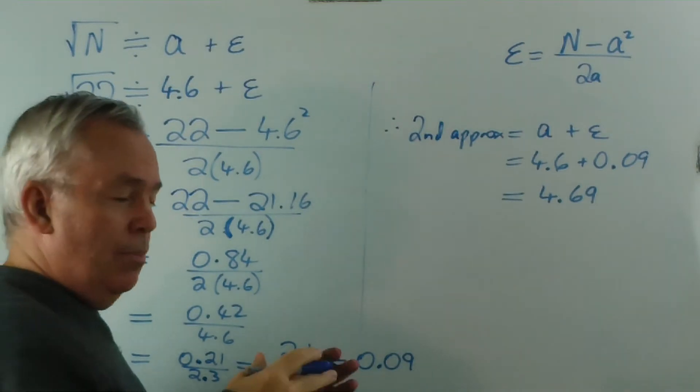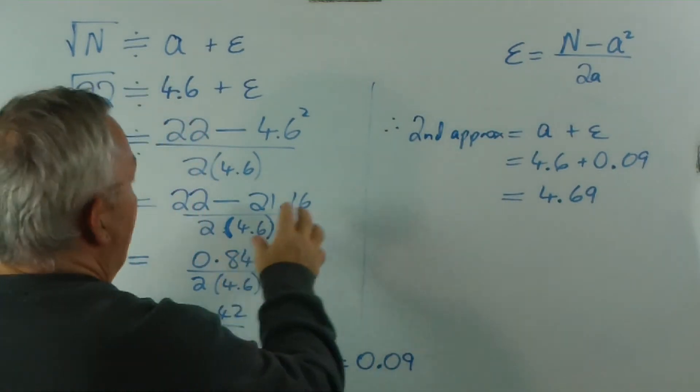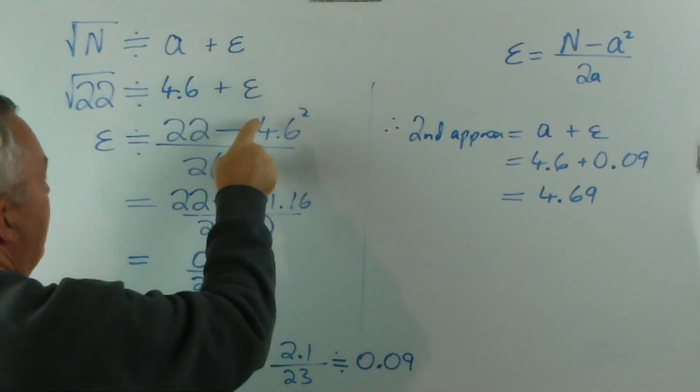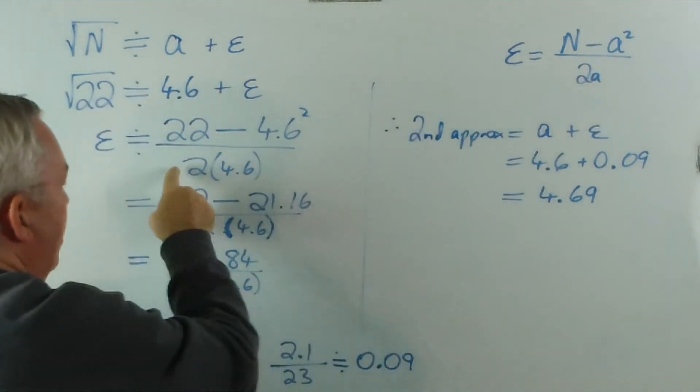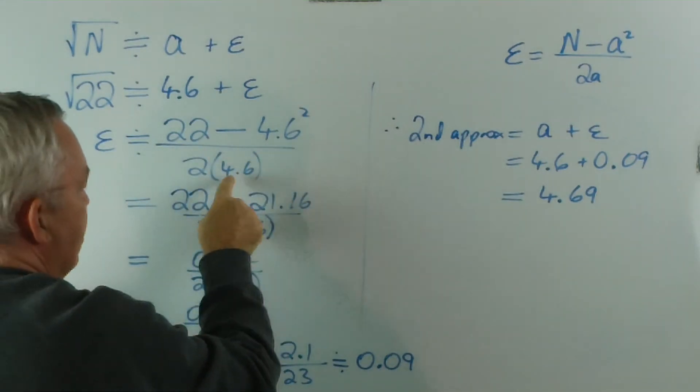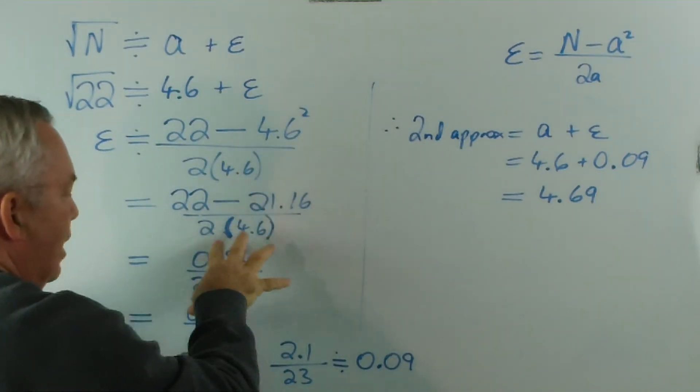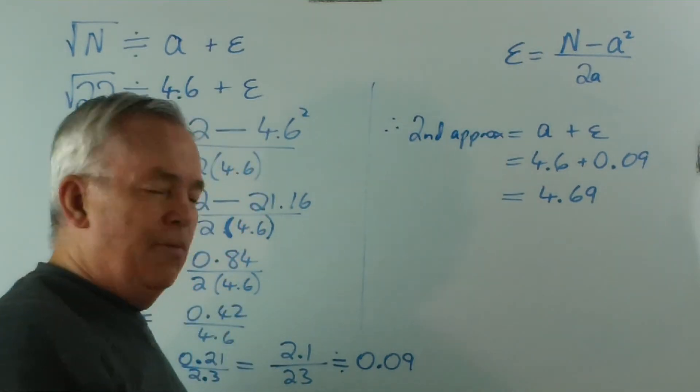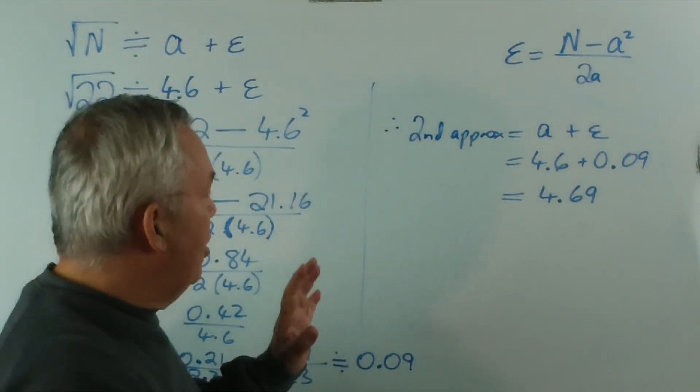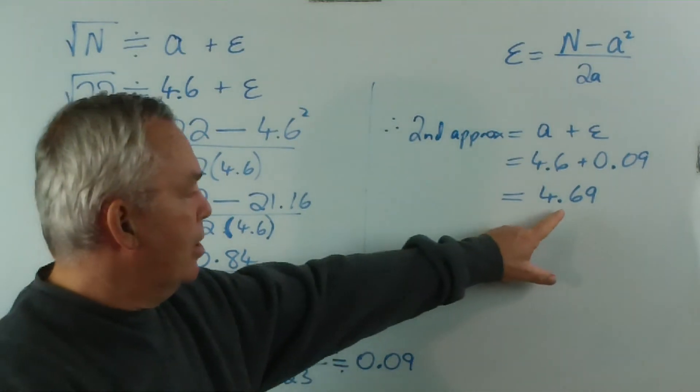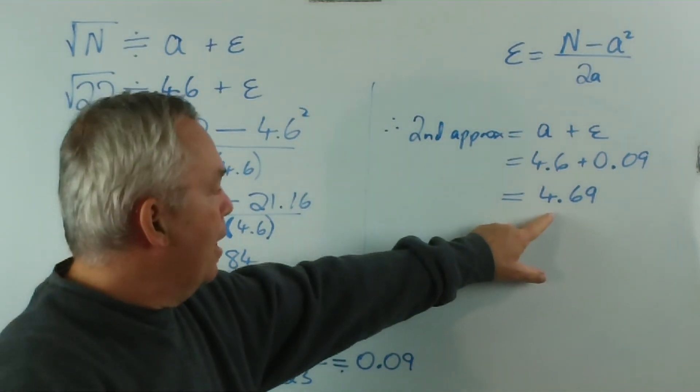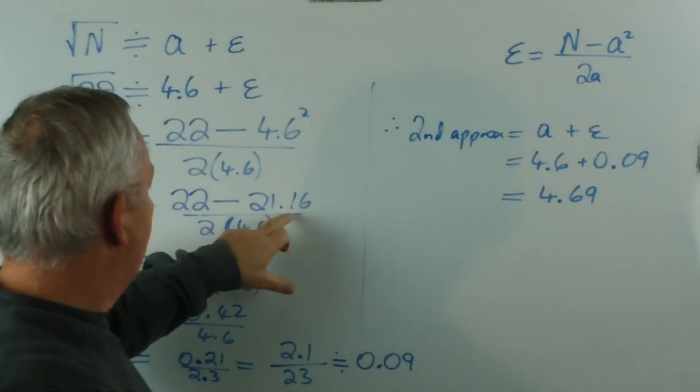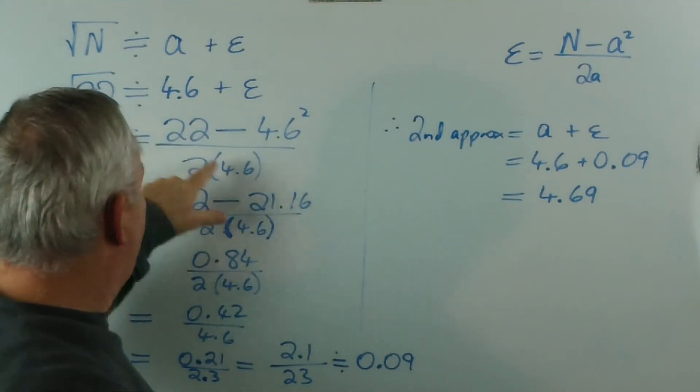Now, if I wanted to approximate again, I would start off by putting 4.69 in here and working out the epsilon for it. So there'd be a 4.69 here and a 4.69 here. The calculations would get worse, but you'll get an even more accurate figure. Now I'm a bit curious to see how much of an improvement we've made. 4.6 squared turned out to be 21.16, which was getting fairly close.